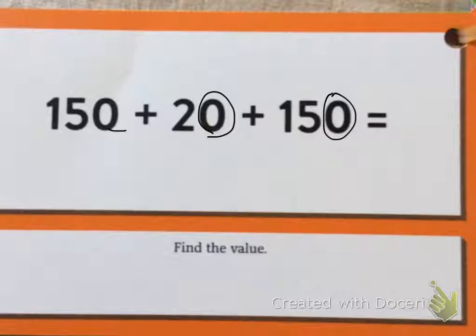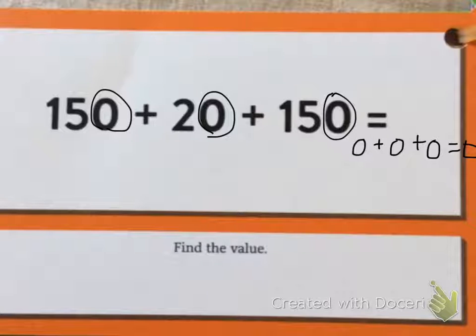Zero plus zero plus zero equals zero. So I have zero once. Now let's go next door to the tens.